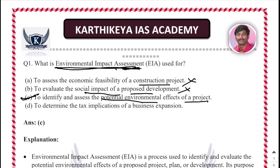Statement D: To determine the tax implication of a business expansion. This assessment is mainly based on how a project will impact the environment, so there is nothing about tax implication of a business expansion. Only option C is correct, so the correct answer is C.